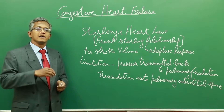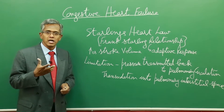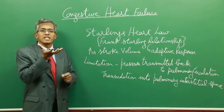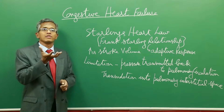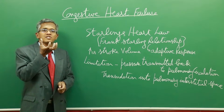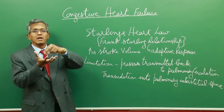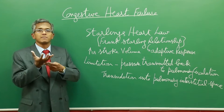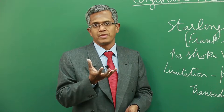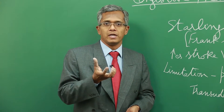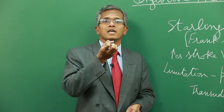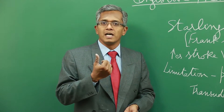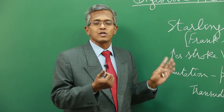Preload is the volume or load experienced by the ventricle before it undergoes systole — that means at the last stage of diastole, when the heart receives blood just before it contracts, the pressure or load experienced by the myocardial cells of the ventricle is called preload. Afterload is the pressure against which the blood has to be pumped from the ventricle. When preload is increased, there is a compensatory increase in myocardial fiber length.